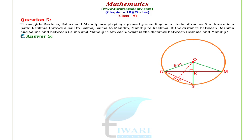In this figure, the distance RS is 6 metres and the distance SM is also 6 metres. We let OK = X, so KS = OS − OK = 5 − X. We also let RK = Y.